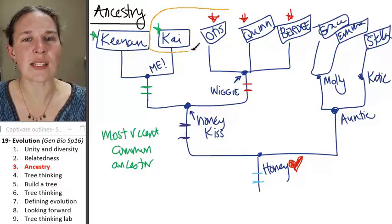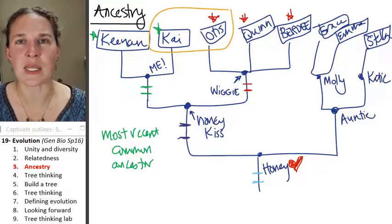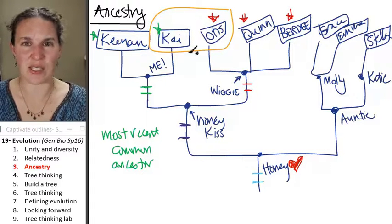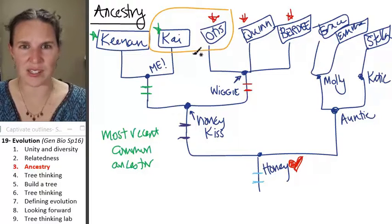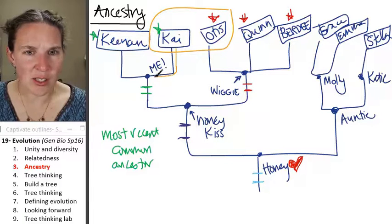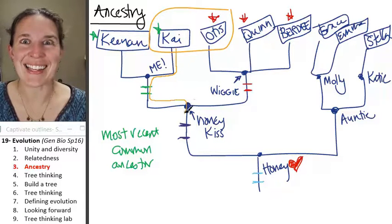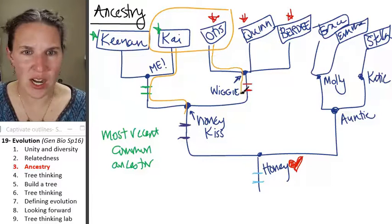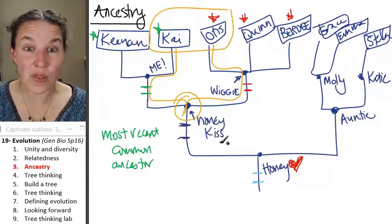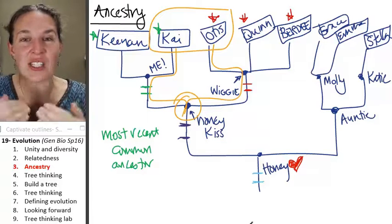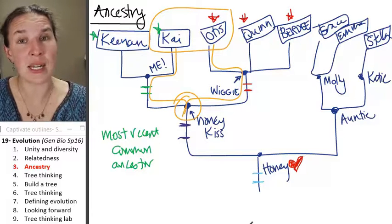Who is Otis and Kai's most recent common ancestor? Do you agree that it's not me? I'm not even an ancestor of Otis. I'm related to him, but I'm not an ancestor. The most recent common ancestor shared, not me, Honeykiss. And look, Otis, Uncle Wiggy is not shared by Kenan, I mean Kai and Otis, but Honeykiss is. Both of them have Honeykiss as their ancestor.